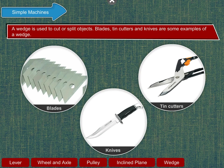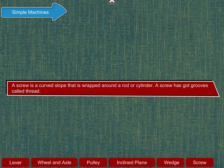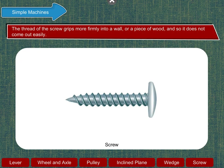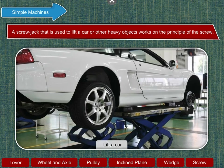A screw is a curved slope that is wrapped around a rod or cylinder. A screw has got grooves called thread. The thread of the screw grips more firmly into a wall or a piece of wood and so it does not come out easily. A screw jack that is used to lift a car or other heavy objects works on the principle of the screw.